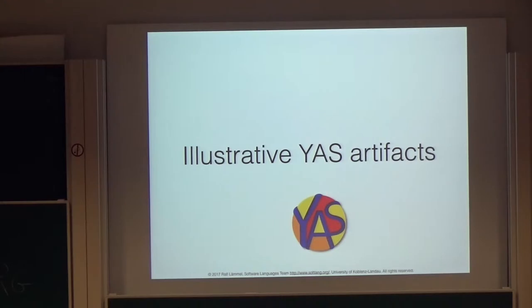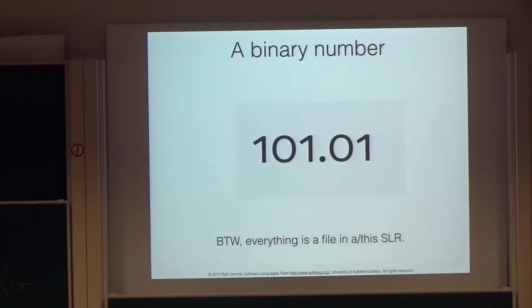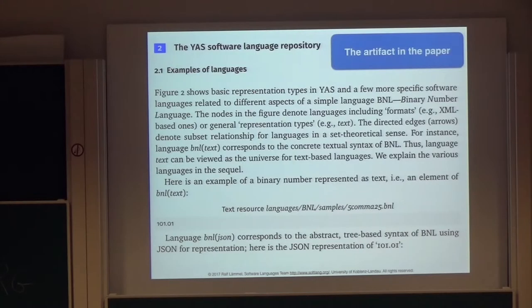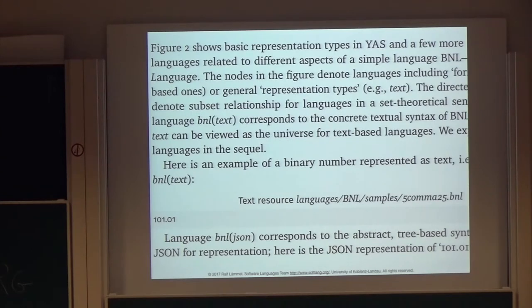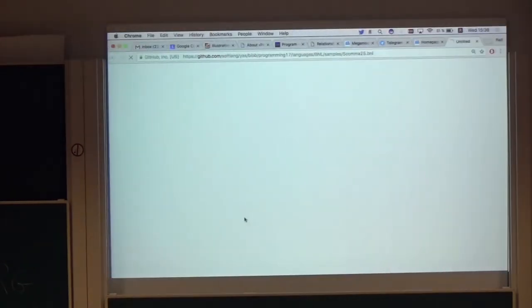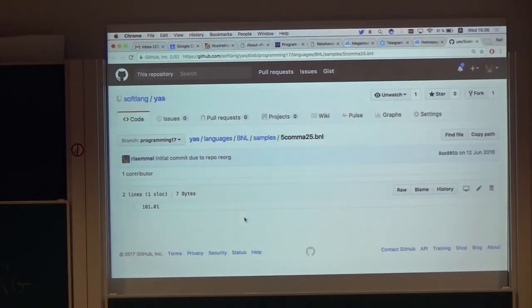Here are some illustrative artifacts. There's a binary number file somewhere in the repository. A basic assumption is that everything is a file — there's no configuration in special scripts, so it's completely file-based, because files are typed by languages. In the paper, when you click these items, you get to a fork of the repository that has been fixed for this publication. That shows this is really a repository-oriented approach.